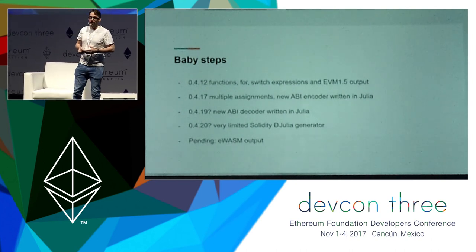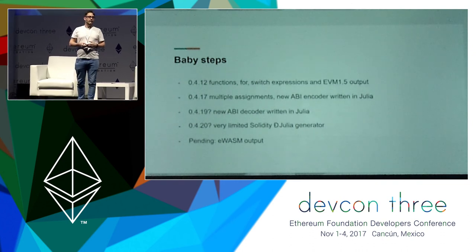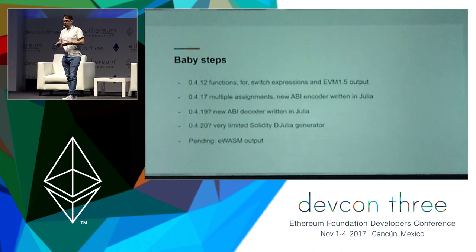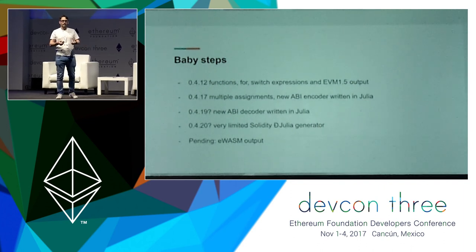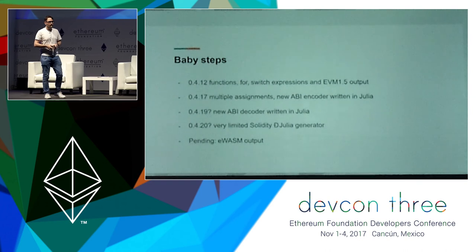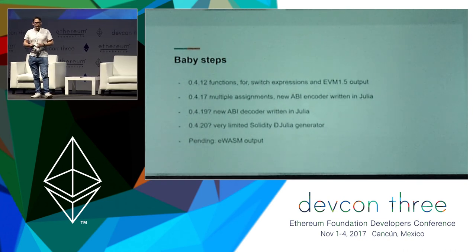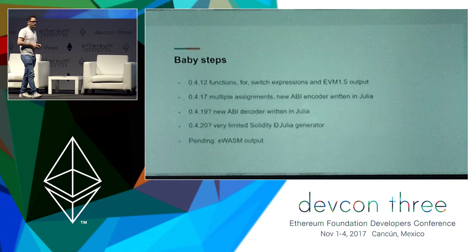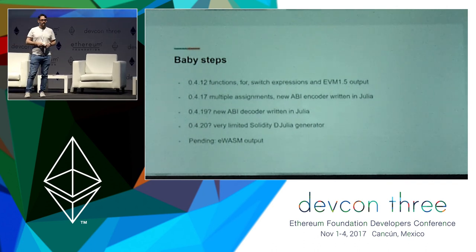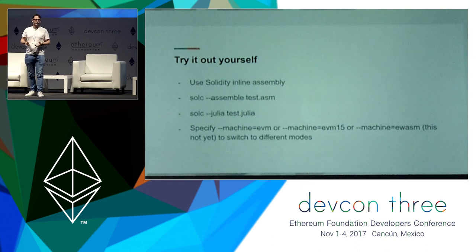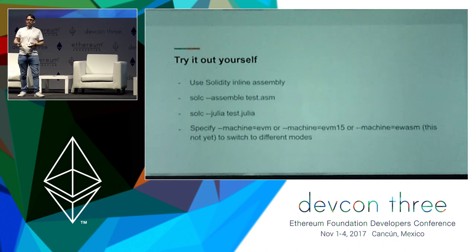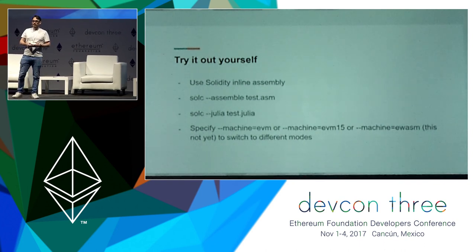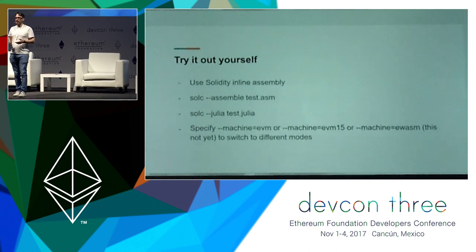Hopefully in the next release we will have a new ABI decoder merged, which will enable functions to receive structs — because right now you can send structs but cannot receive them. Then hopefully two releases from now we will have a first version of a Solidity-to-Julia compiler as part of Solidity. You can already try it out: those are the command line options to use the Solidity compiler to compile assembly, and you can also switch to Julia mode — the only difference there is using types — and the last line is for changing the output machine.